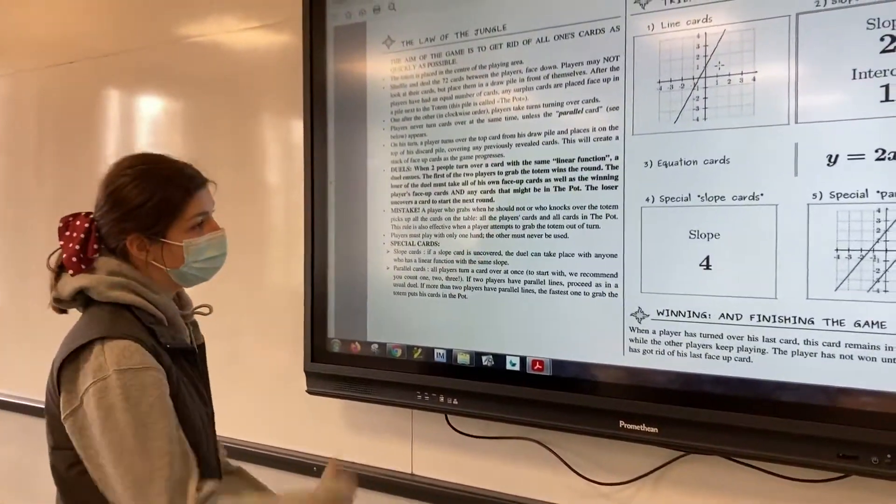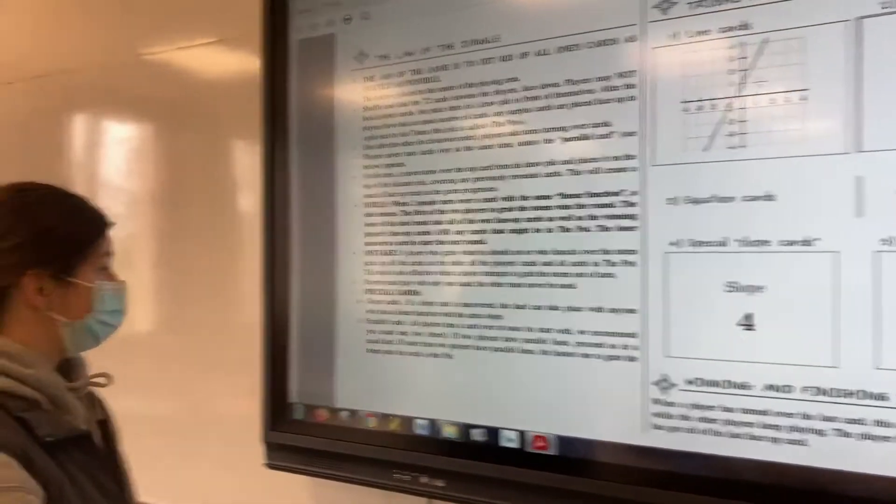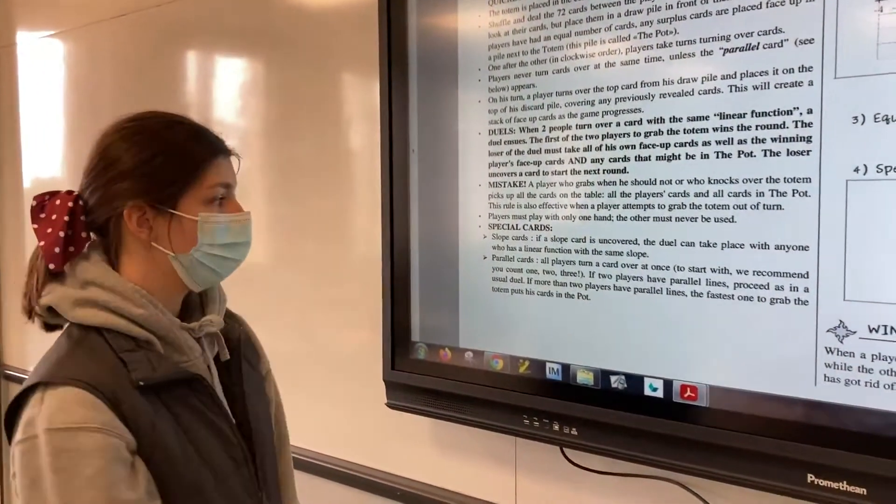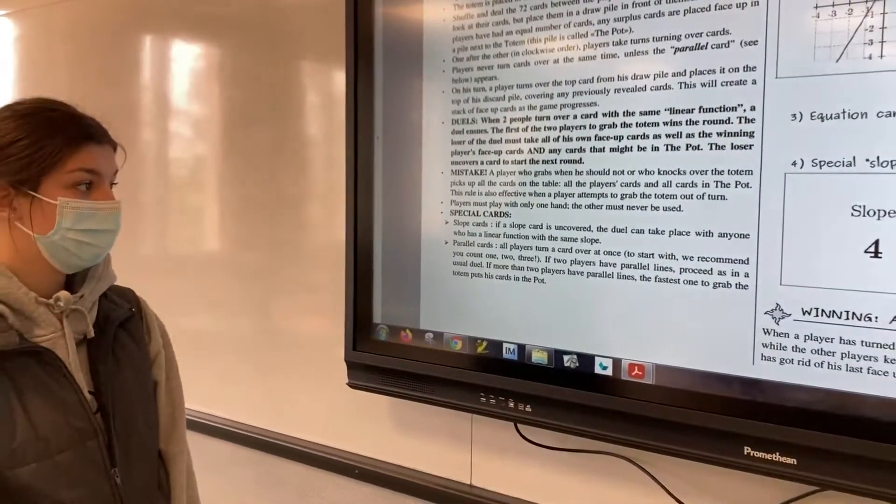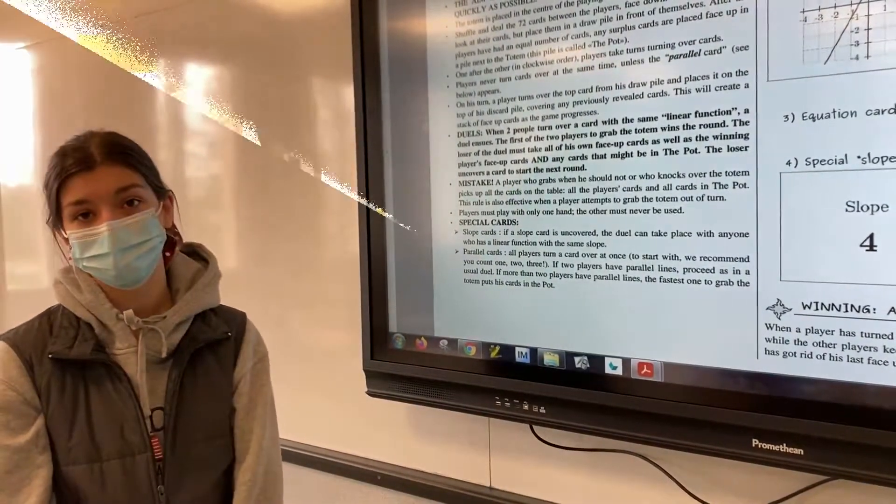We have special slope cards, for example, slope 4. If a slope card is uncovered, the duel can take place with anyone who has a linear function with the same slope.